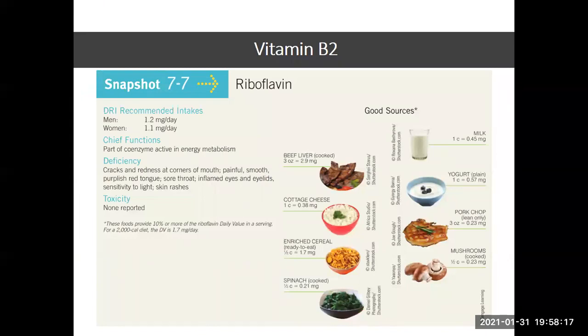Vitamin B2, which is riboflavin, is very high in meat, in cheese, in milk and milk products, and in certain vegetables like spinach.